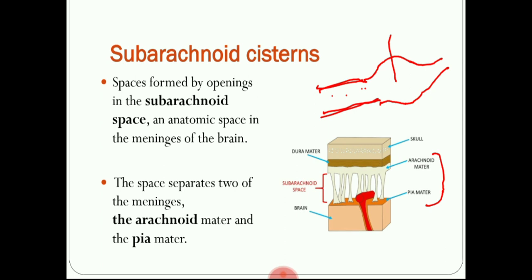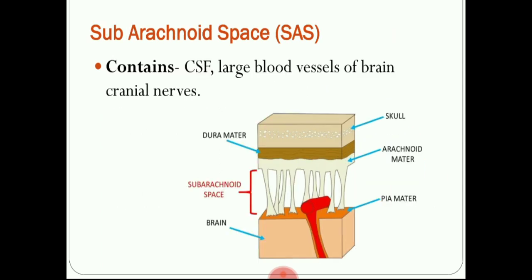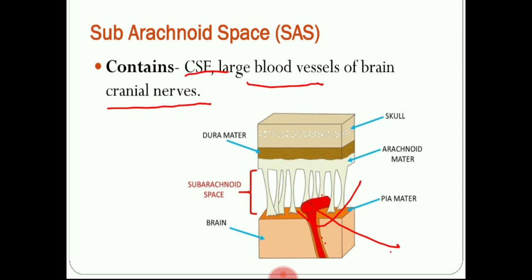The subarachnoid space contains CSF — that is cerebrospinal fluid — as well as some of the large blood vessels, including arteries and veins. Some larger veins are located within this subarachnoid space, and some roots and parts of the cranial nerves are also seen in between the subarachnoid spaces. The subarachnoid cisterns are of great clinical significance due to the presence of cerebral arteries, veins, and some cranial nerves. Damage to these vascular structures, mainly the arteries, can cause bleeding leading to subarachnoid hemorrhage.